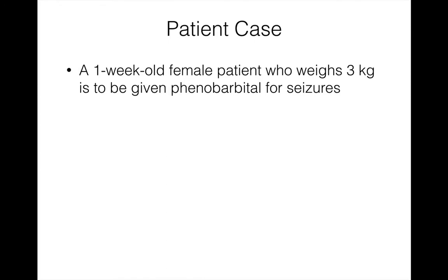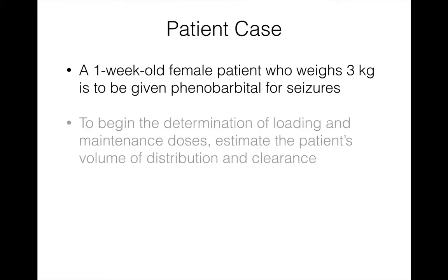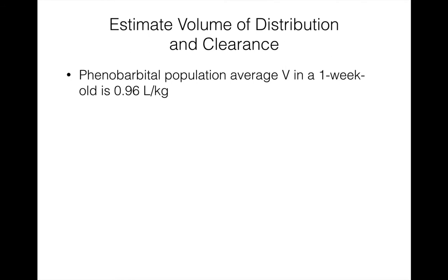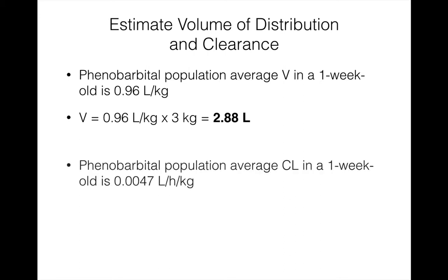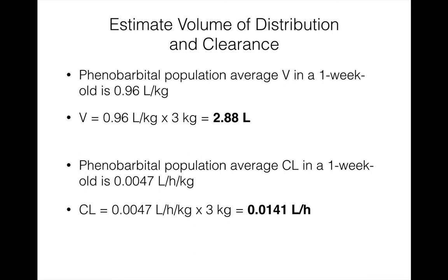Let's begin with a patient case. We have a one-week-old female patient who weighs three kilograms, to be given Phenobarbital for seizures. To determine a loading and maintenance dose, we need to estimate the patient's volume of distribution and clearance. The population average volume in a one-week-old is 0.96 liters per kilogram, giving a volume of 0.96 × 3 = 2.88 liters. The population average clearance is 0.0047 L/hr/kg, giving a clearance of 0.0141 liters per hour.